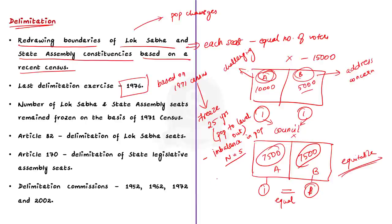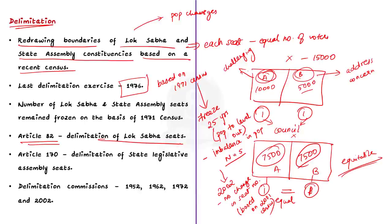In 2002, there was another delimitation exercise, but it did not change the total number of seats in Lok Sabha or state legislative assemblies. The boundaries were redrawn based on the 2001 census, but the total number of seats remained the same as in 1976. Article 82 empowers parliament to readjust the allocation of Lok Sabha seats and divide states into territorial constituencies after every census, through a delimitation act.